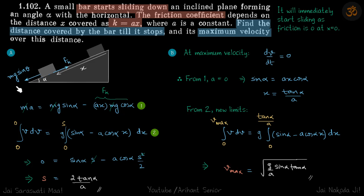Sliding friction is maximum because it is sliding, so that is k times normal reaction mg cos alpha. So we have written f equals ma here.